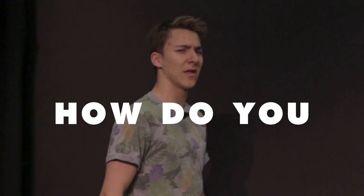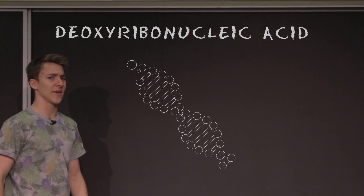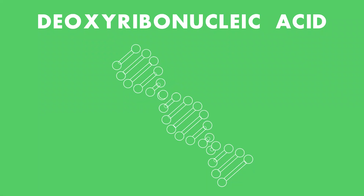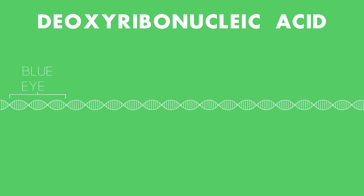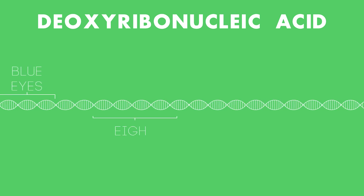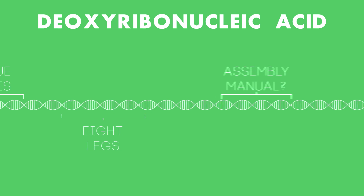How do you make a person? The human body is made up of a huge array of structures, each made up of billions or even trillions of cells. So how do these cells know how to organize themselves in such complex forms? Must be DNA then, right?